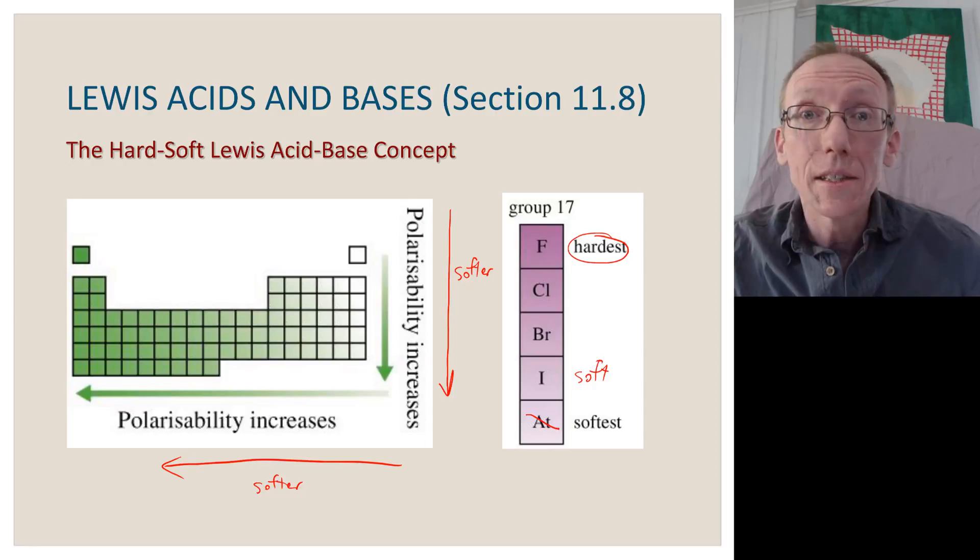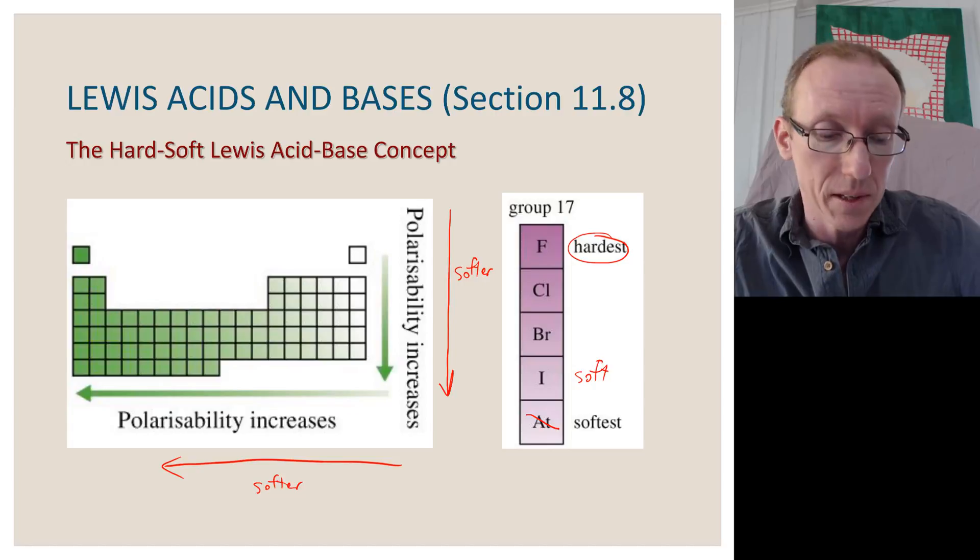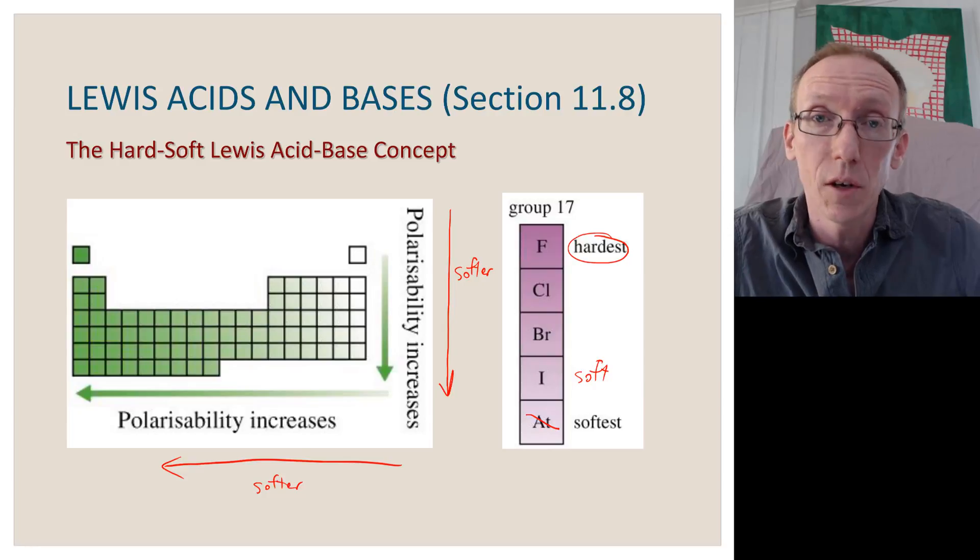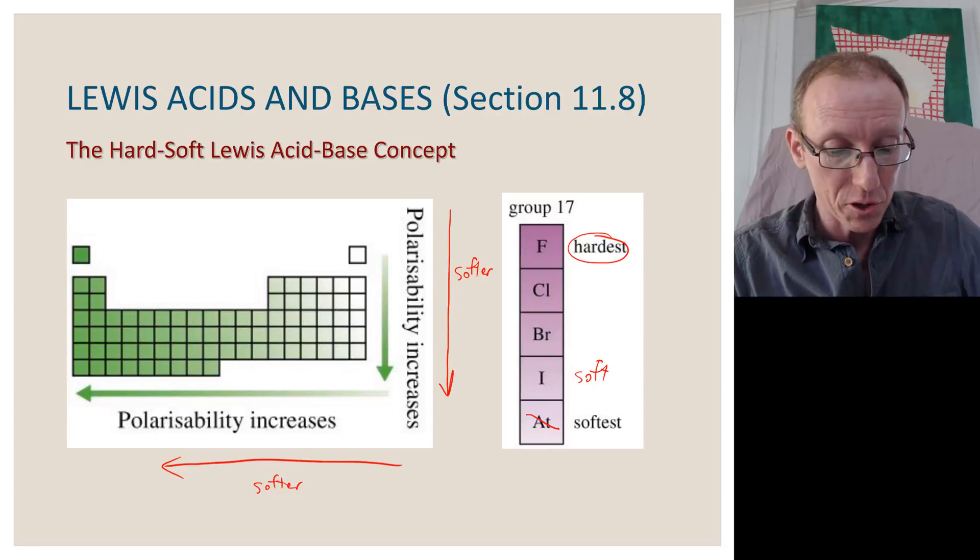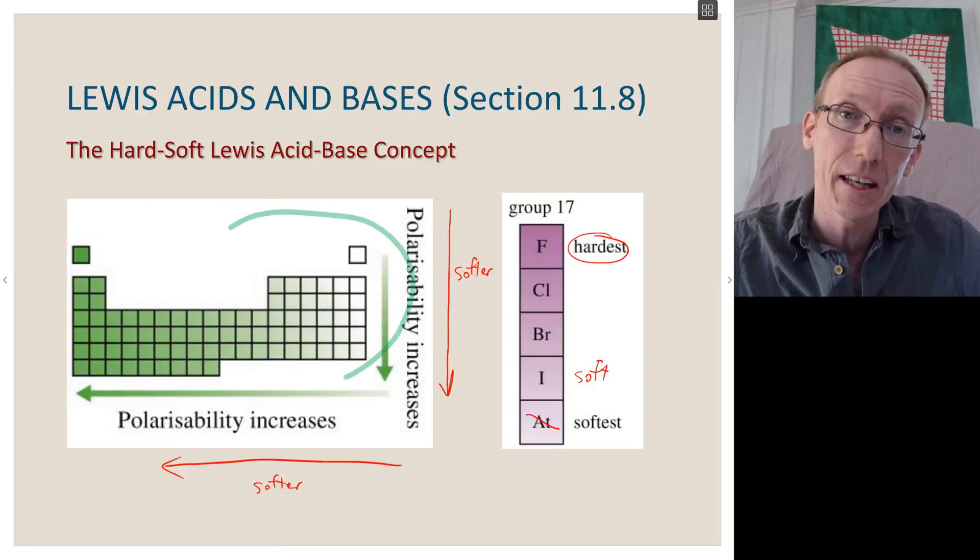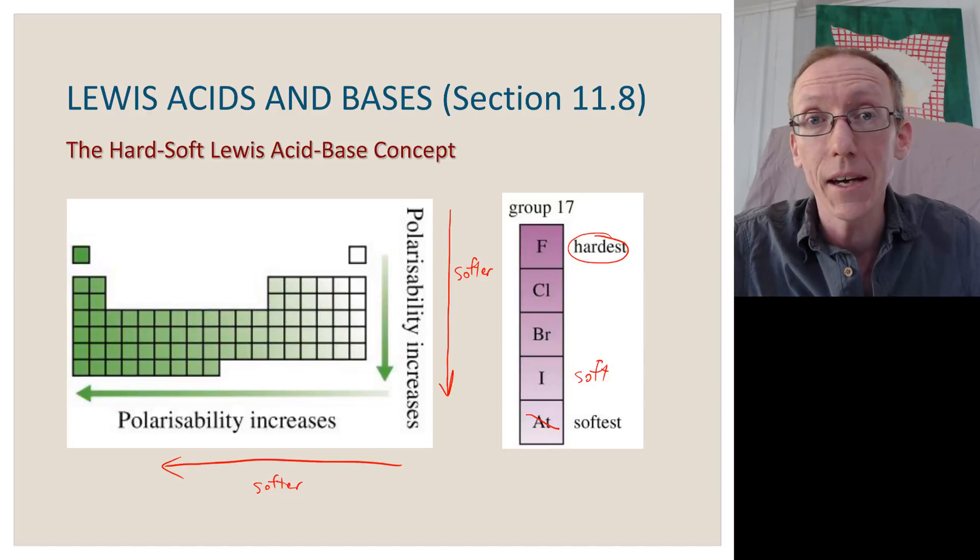Okay, so that's all we're going to say about Lewis acids and Lewis bases, and the concept of hardness and softness. Just remember that hard acids like to interact with hard bases, and soft acids like to interact with soft bases. And remember this general trend that in the periodic table, as we go down and towards the left, we get to softer and more polarizable elements. Okay, thanks for watching!